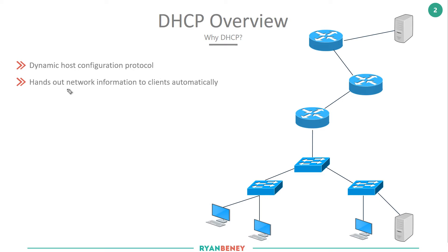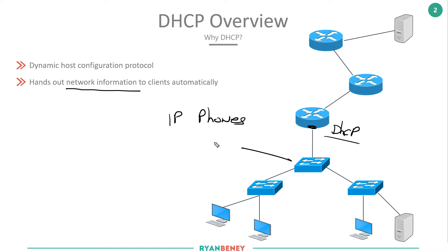You'll notice I said DHCP hands out network information, not specifically IP addresses. At the CCENT level you need to know it hands out IP addresses, but in reality it does a lot more. For example, when an IP phone is plugged in with no knowledge of its phone number, phone profile, speed dial settings, extension, or voicemail destination — all of this information is normally downloaded from a server, and when the phone connects it doesn't know where that server is. DHCP helps with that.